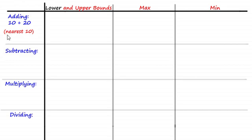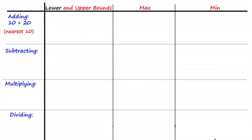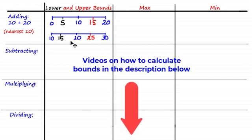Let's start with the first example. Suppose we're adding 10 and 20, and these numbers have been rounded to the nearest 10. How do we find the maximum and minimum of the sum? It makes sense to calculate the bounds for each individual value first. Using the fact that they've both been rounded to the nearest 10, the upper bound for 10 is 15, the lower bound is 5, the upper bound for 20 is 25, and the lower bound is 15.